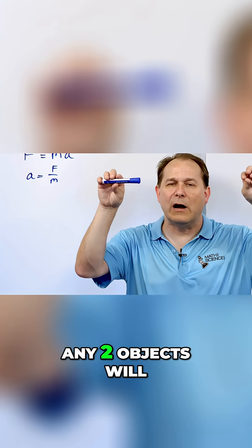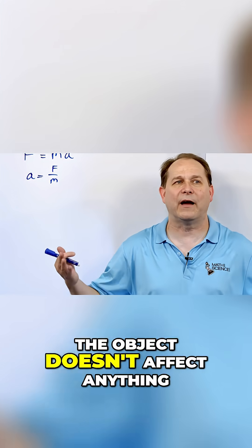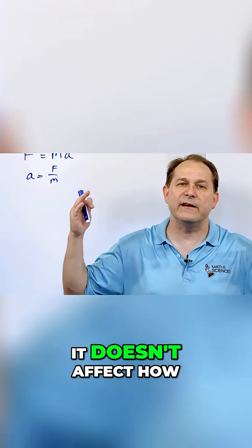We say that two objects, any two objects, will hit the ground at the same time. What we're saying is that the mass of the object doesn't affect anything - it doesn't affect how fast it falls.